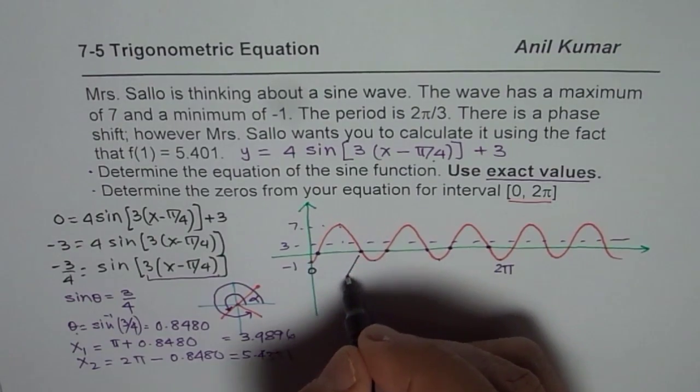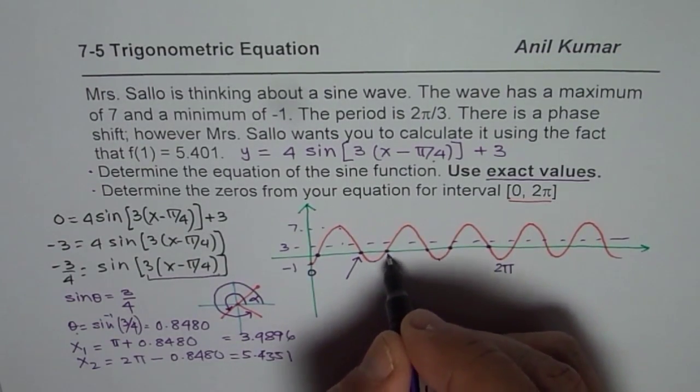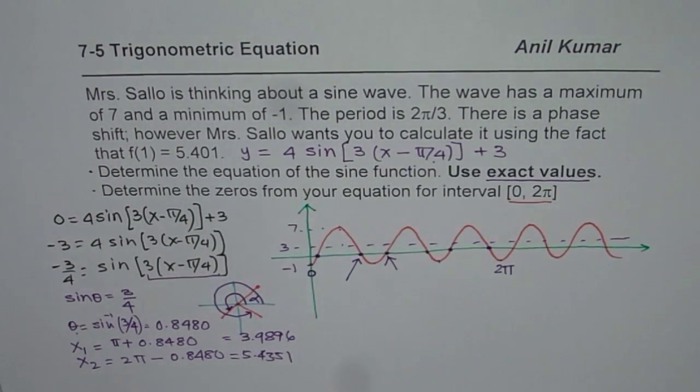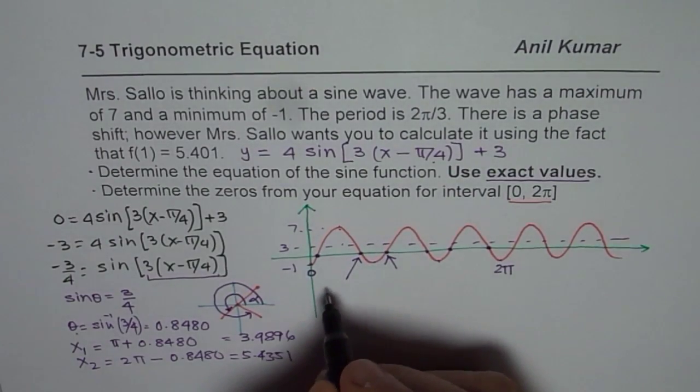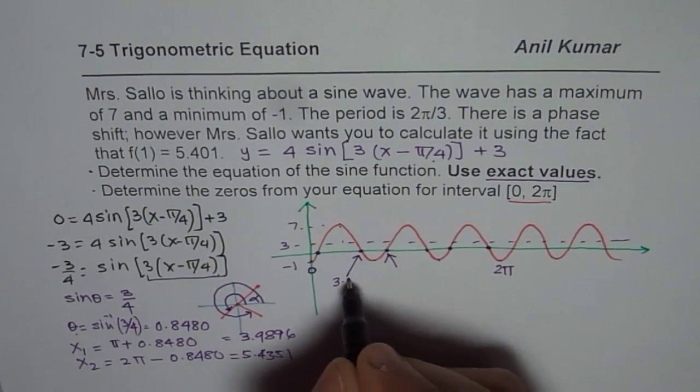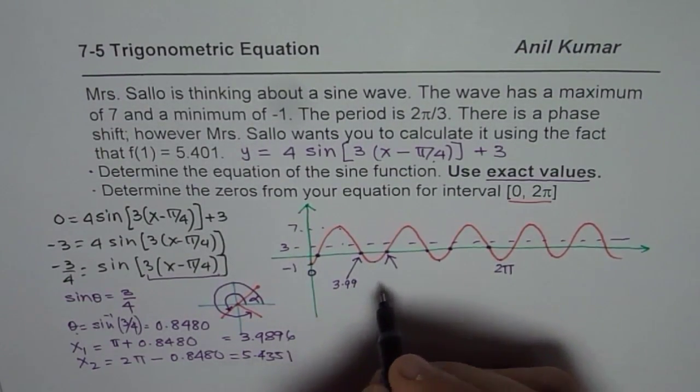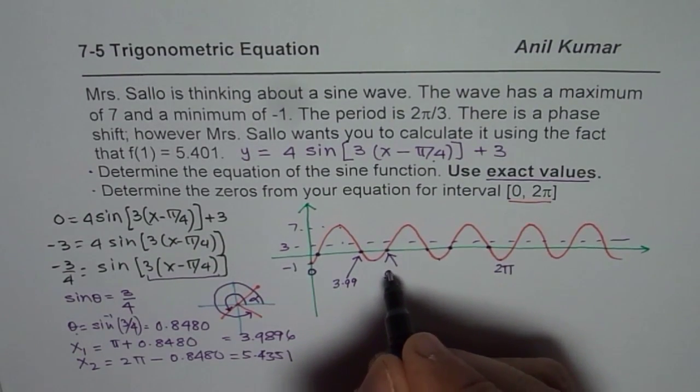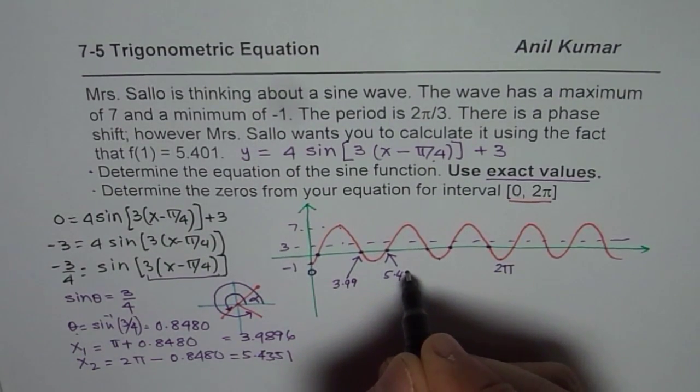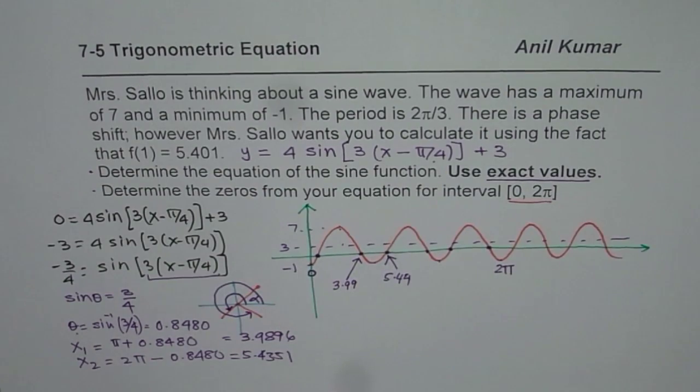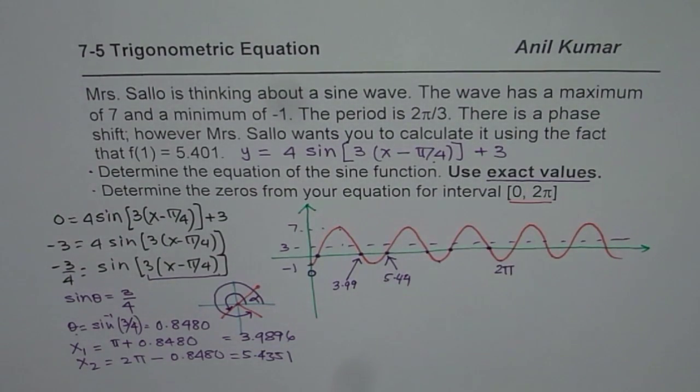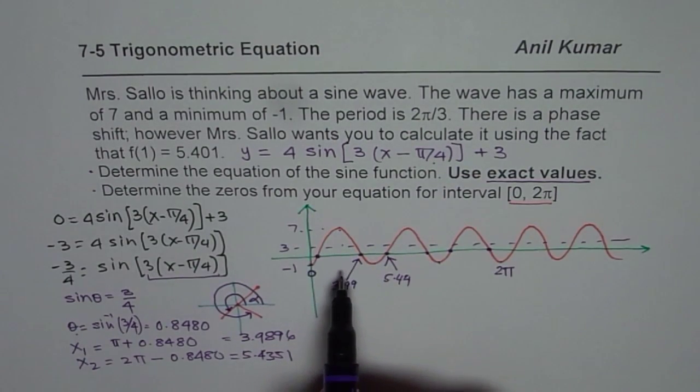These two values which we got are these two values. So one of them is, let me write this as 3.99 approximately and this value I am writing as 5.44. So these are the two values which we have got. Now the idea is how do we get the other values.